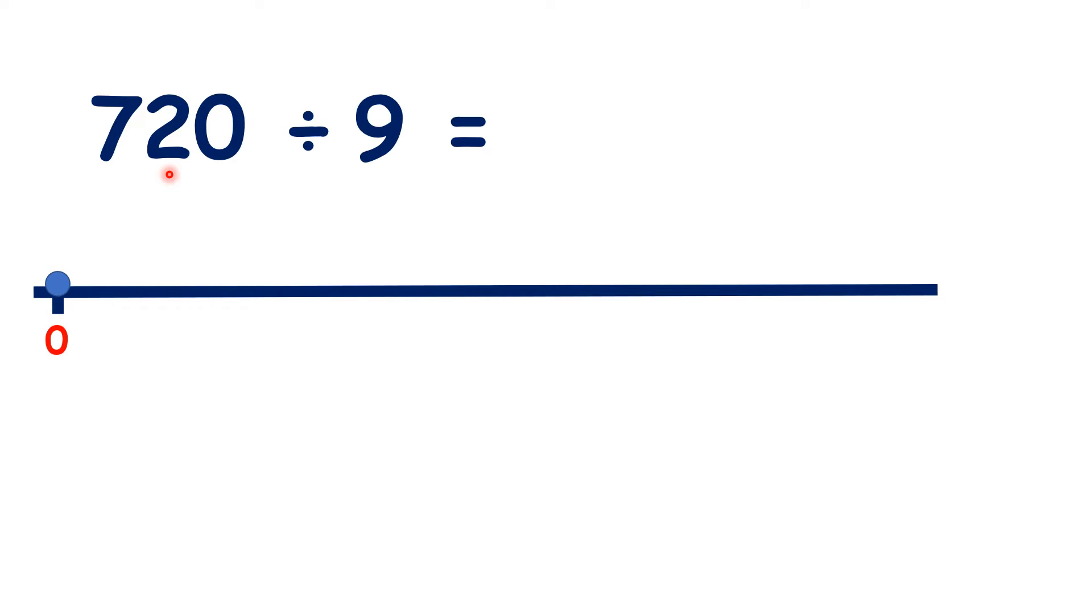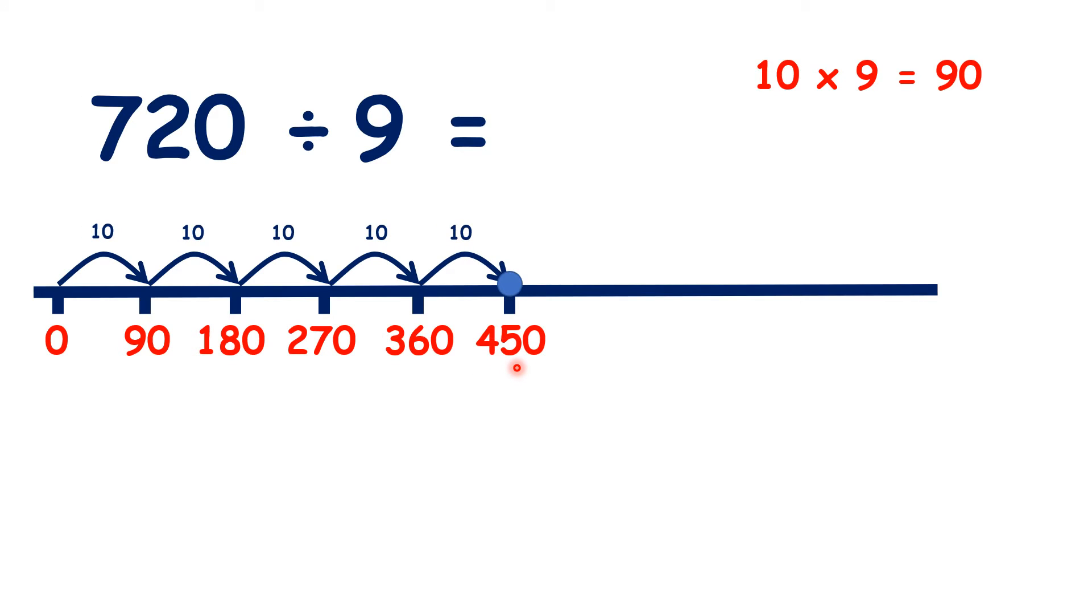So what is 720 divided by 9? Again, we can count up in steps of 10 times 9 each time. So 90, 180, 270, 360, 450, 540, 630, and 720.